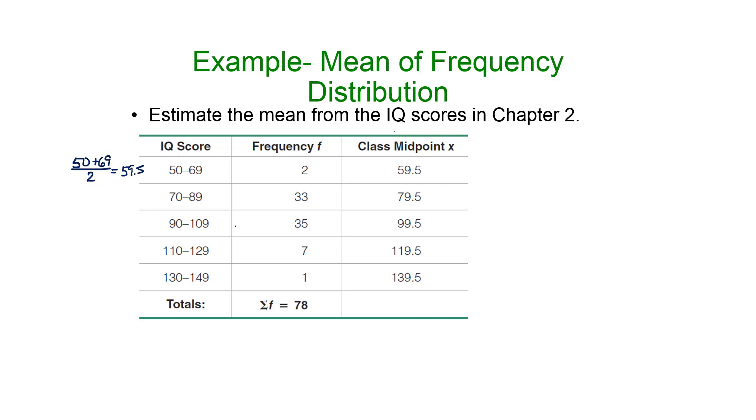We're going to add 20 and get 79.5 for this one, add 20 more to get 99.5, and so on. So we're going to pretend that in that class we had two data values of 59.5. Of course we didn't.